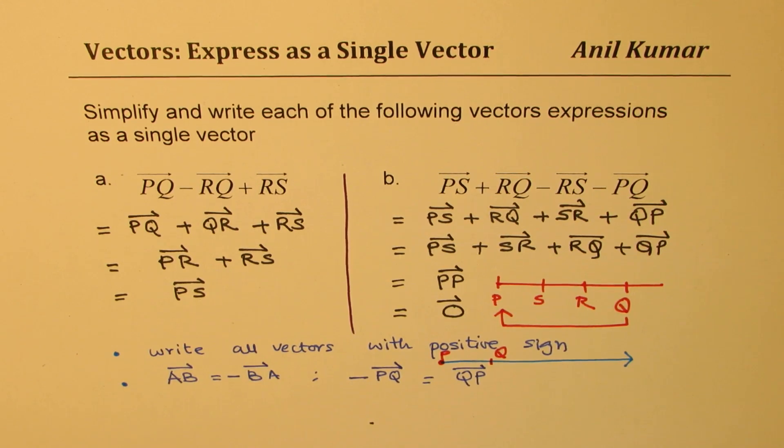So again, it is important to write zero vector. So this arrow on the top shows that this zero is not a scalar quantity. It is a vector quantity. Perfect. So that is how you are going to solve it.